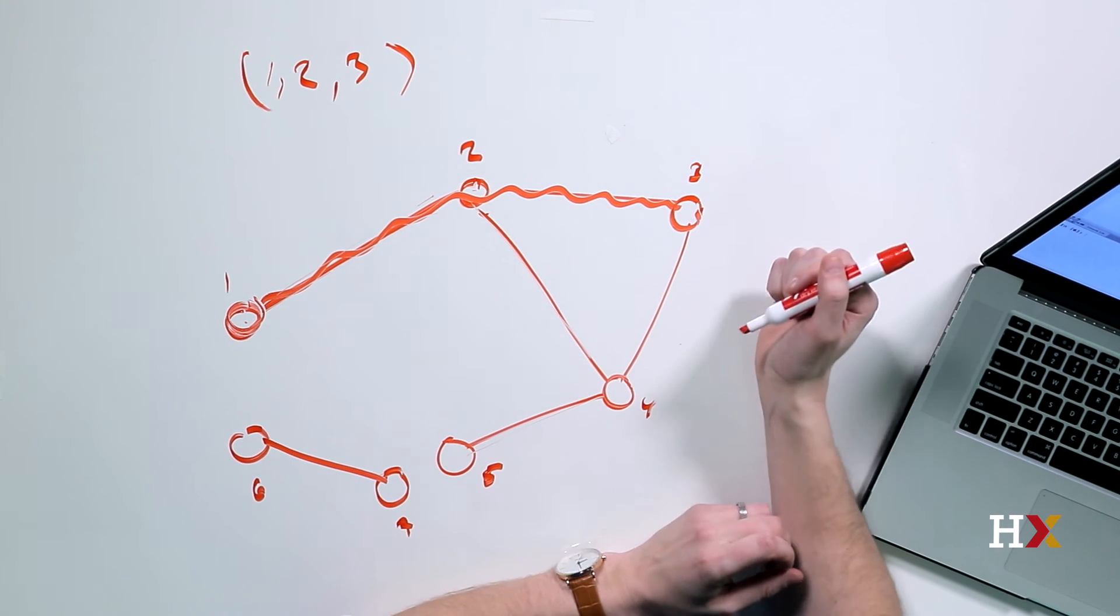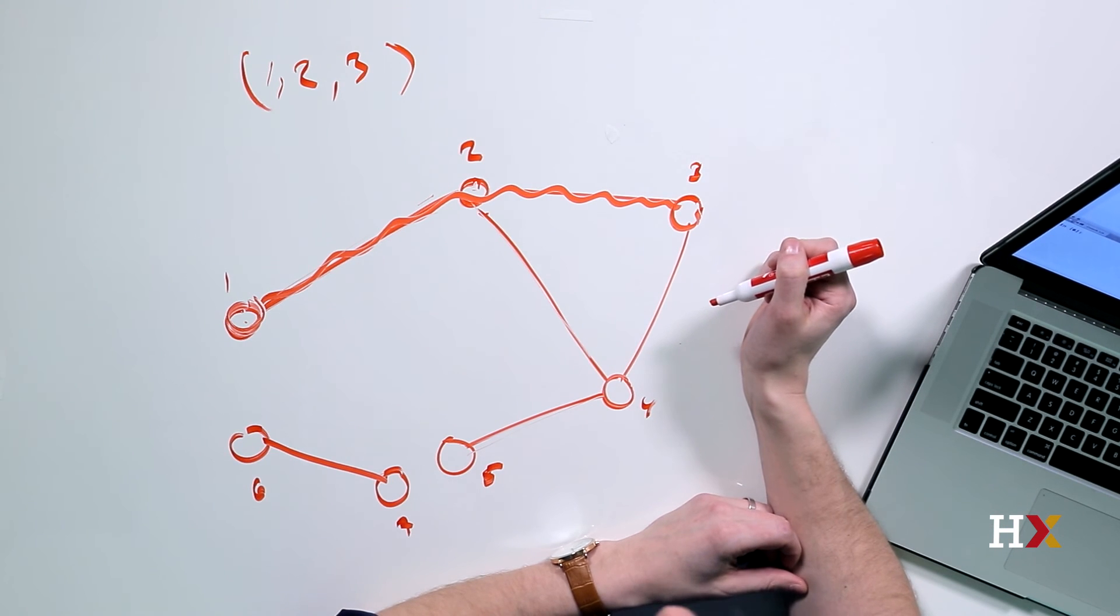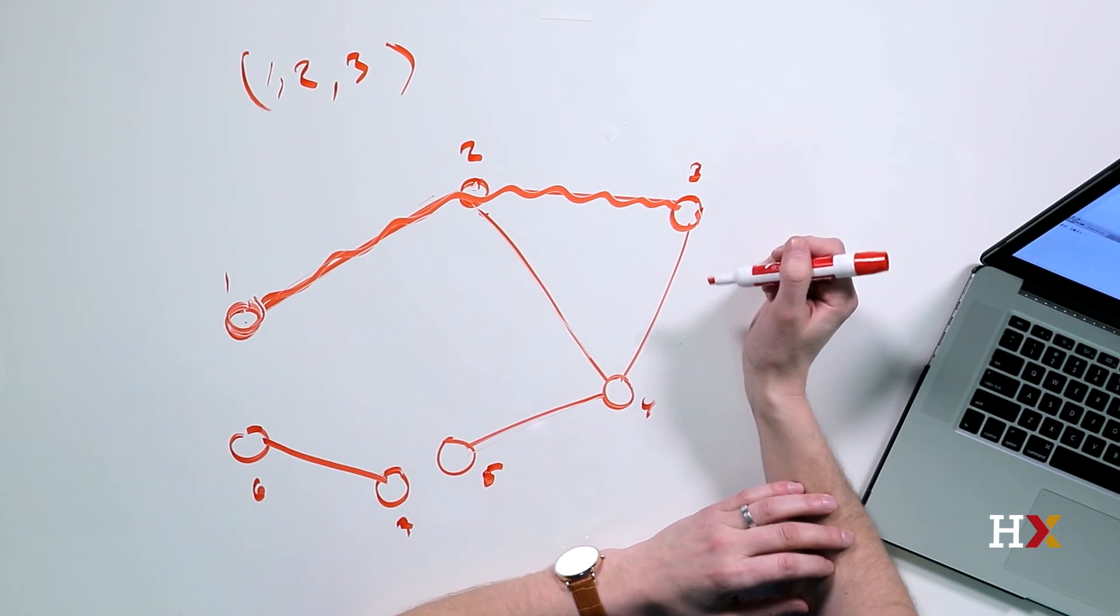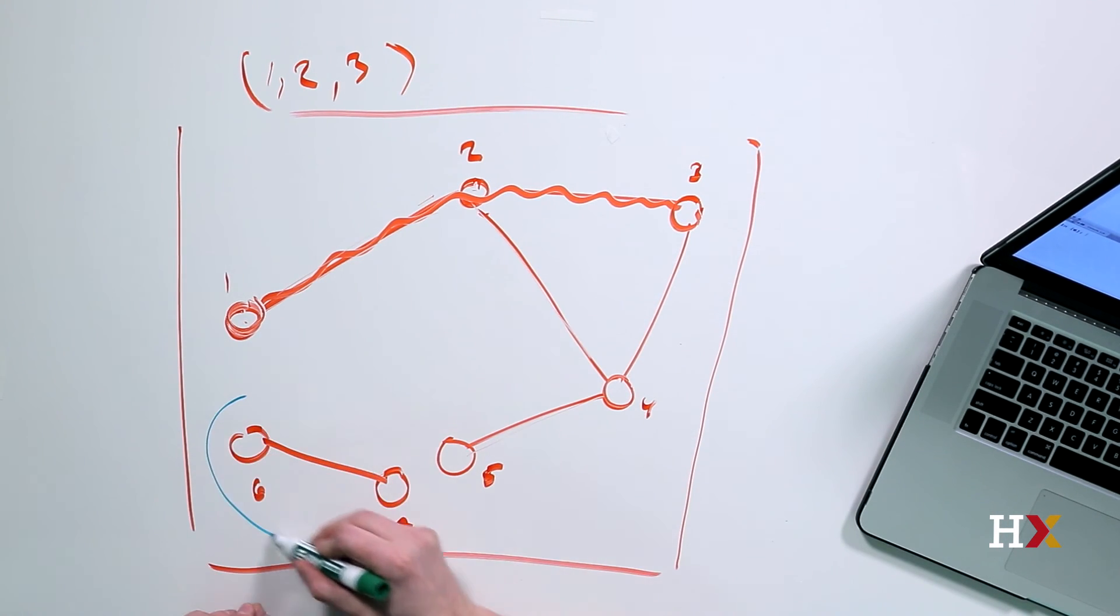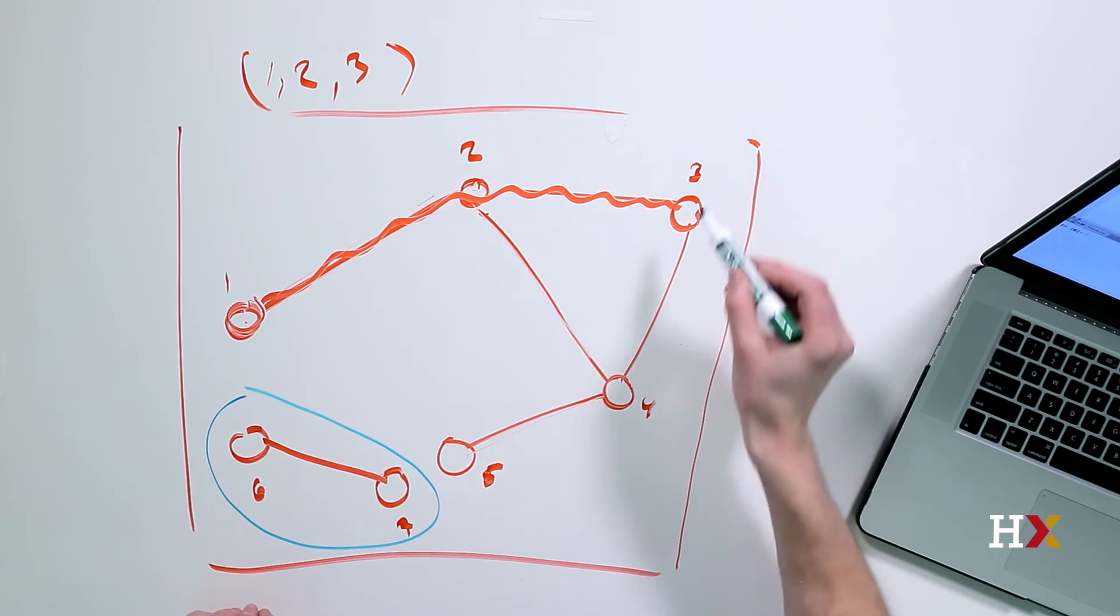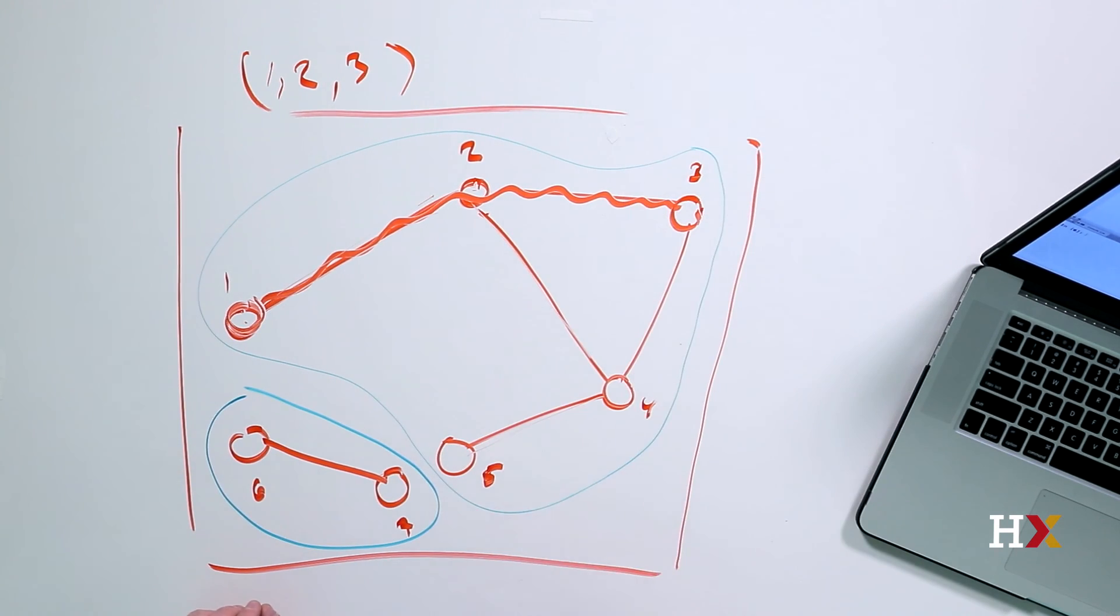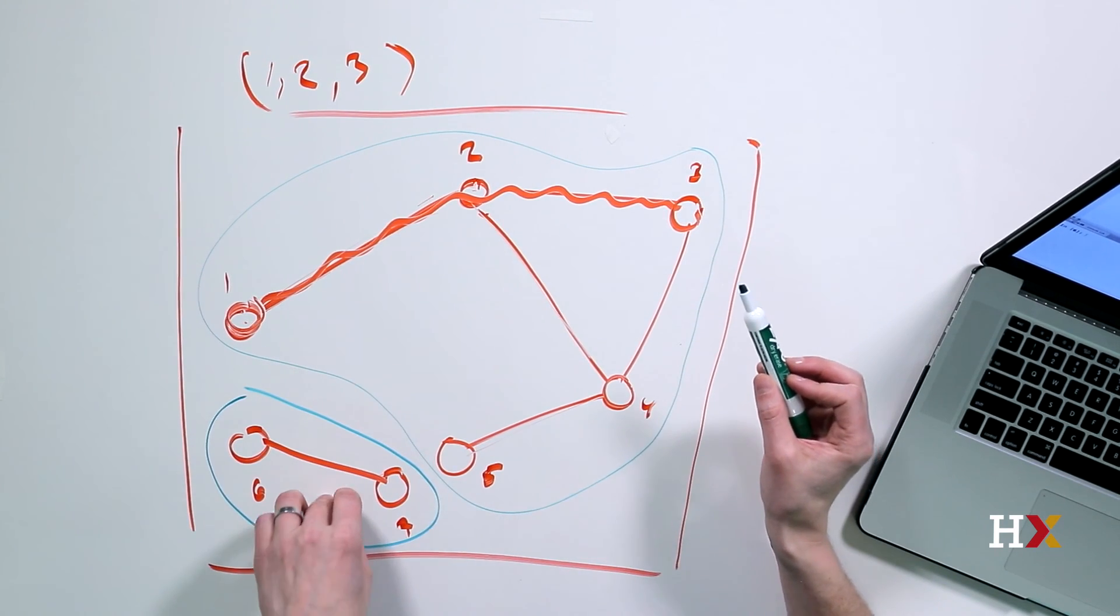If a graph is disconnected, it breaks apart naturally into pieces or components. Any component is connected when considered on its own, but there are no edges between the nodes that belong to different components. In this case, we have two components. We have one component over here, and we have our second component, which is over here. And there are no edges from nodes in this component to nodes in this component.